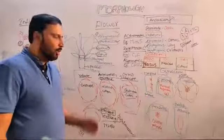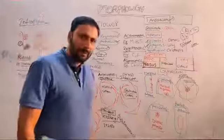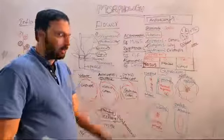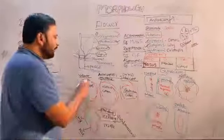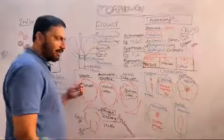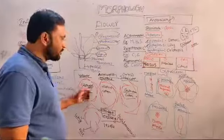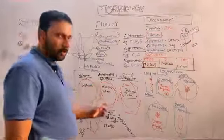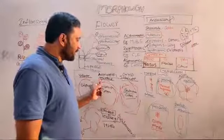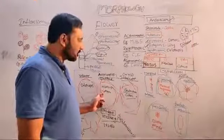Aestivation — mode of arrangement of perianth lobes during the bud condition is called aestivation. When the perianth lobes are arranged with small gaps, it is called valvate aestivation — example Calotropis. When the perianth lobes are overlapping one above the other, it is called twisted aestivation — example hibiscus and cotton.